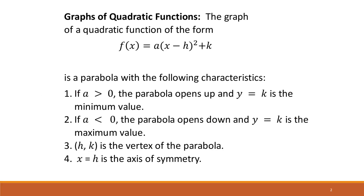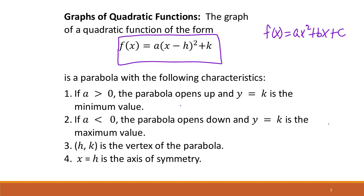When graphing a quadratic function, it helps to get it in vertex form. We're used to quadratics in the form f(x) = ax² + bx + c, but first we'll look at graphing in vertex form. The rules: if a > 0, the parabola opens up and y = k is the minimum; if a < 0, it opens down and y = k is the maximum. The point (h, k) is the vertex, and x = h is the axis of symmetry.